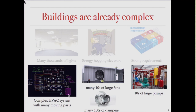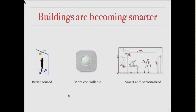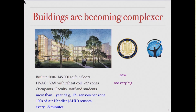We might want part of a room to be slightly warmer based on occupant preferences. The effect of increasing complexity is that buildings are basically becoming more complex. Taking the CSE building as an example — a fairly small, quite new building — it has 237 zones, about half the number of rooms, across only four floors, and yet it already has 5,000 sensors distributed across it.